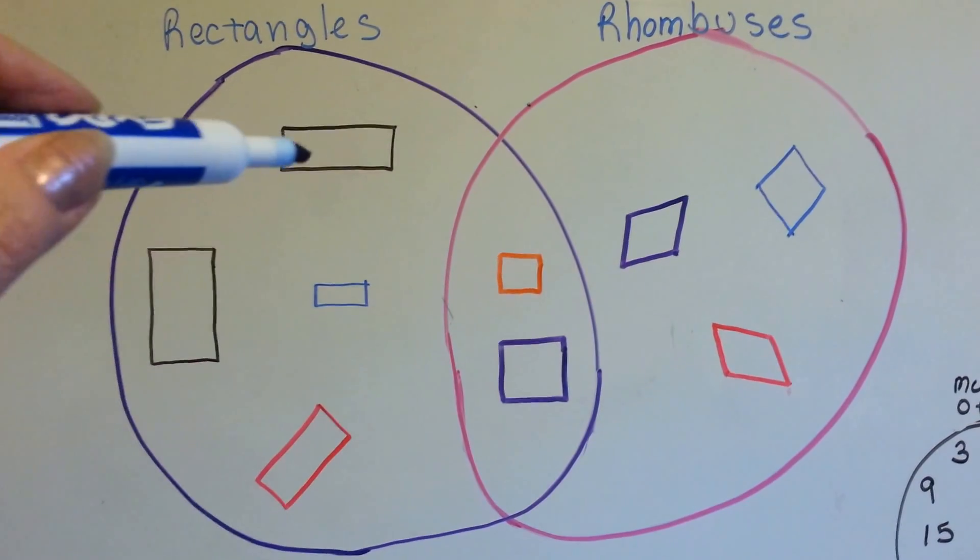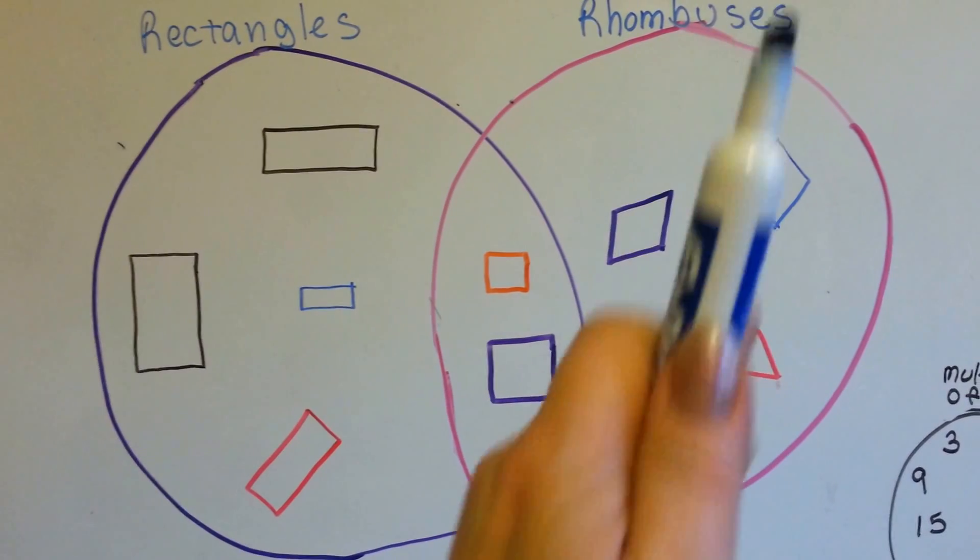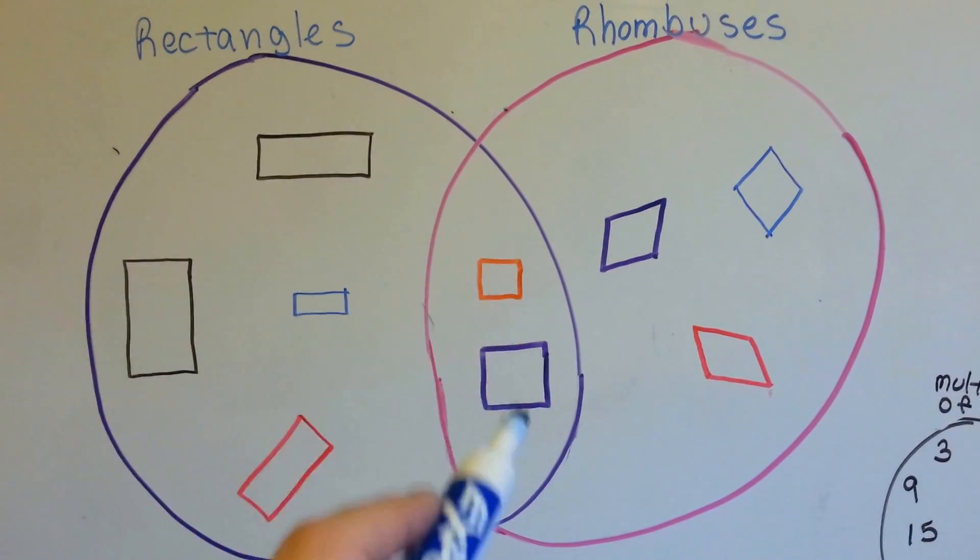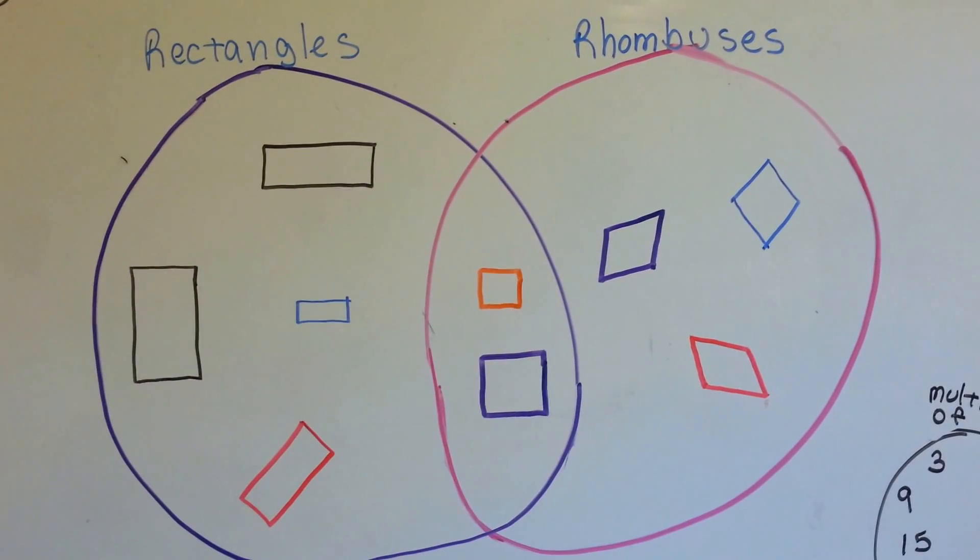So here we've got some regular rectangles, see? Here we've got some slanty rhombuses, and in the middle are squares, because squares are both rectangles and rhombuses, see?